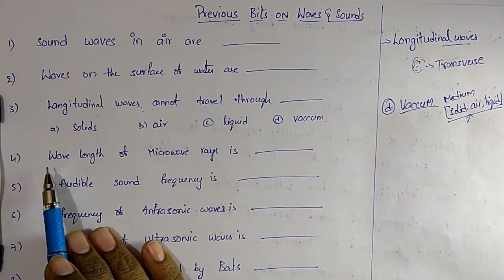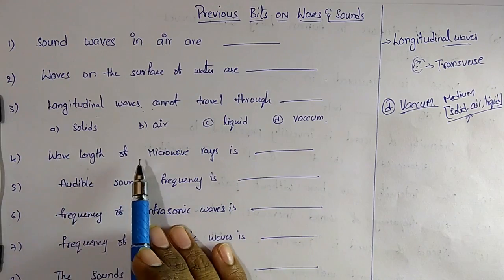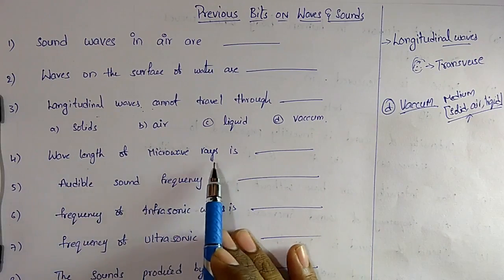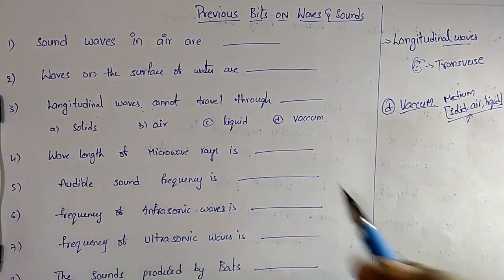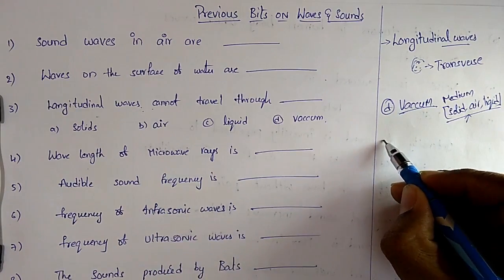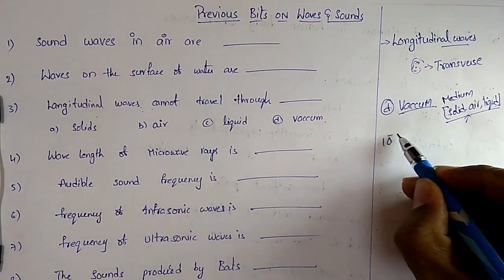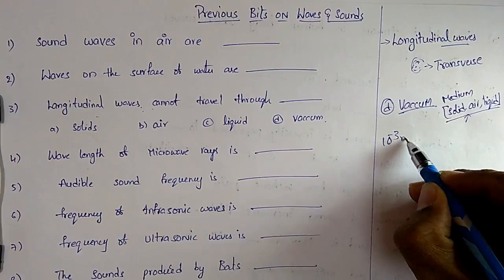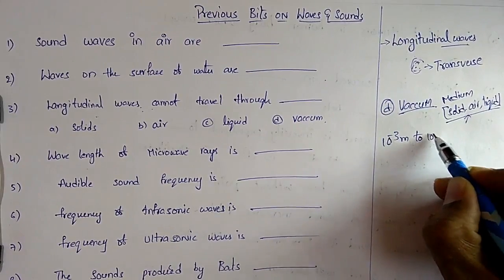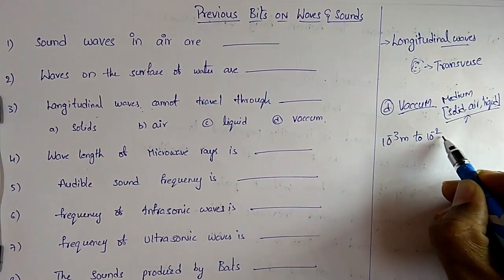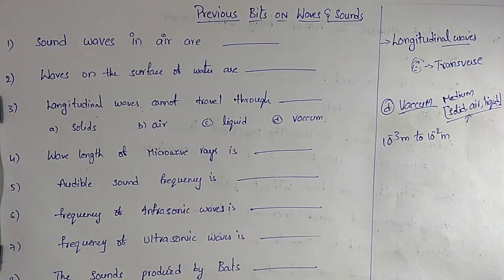Question 4: The wavelength of microwave rays is very important. The wavelength of microwave rays is 10⁻³ meters to 10⁻² meters.